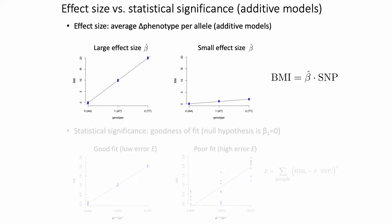Two important concepts for association testing are effect size and statistical significance. Effect size generally refers to the average change in phenotype per reference allele that you estimate when you fit your line, represented by beta in the equation: phenotype = beta × SNP + beta_0. A large effect size would be, for example, an average BMI change of 10 units per reference allele, while a small effect size would show barely any change per additional reference allele.